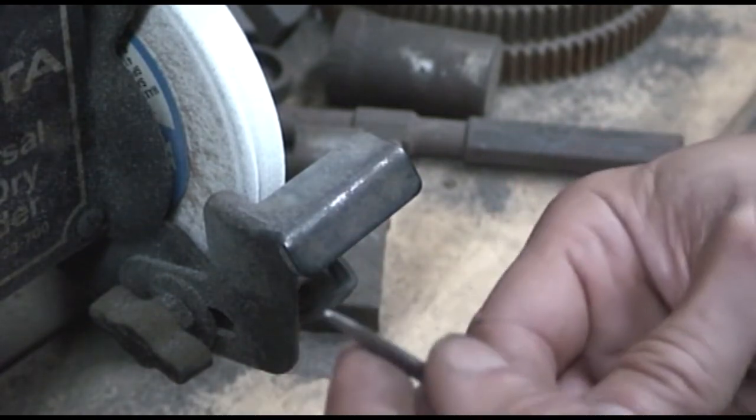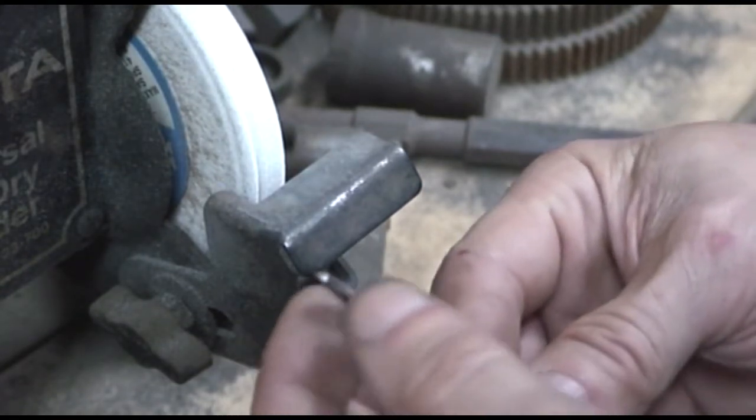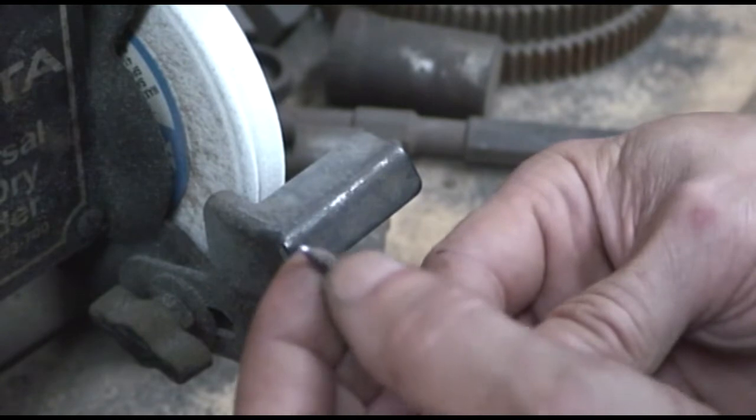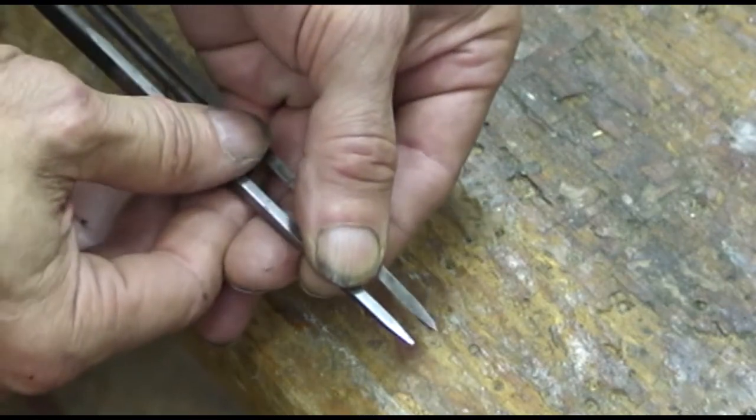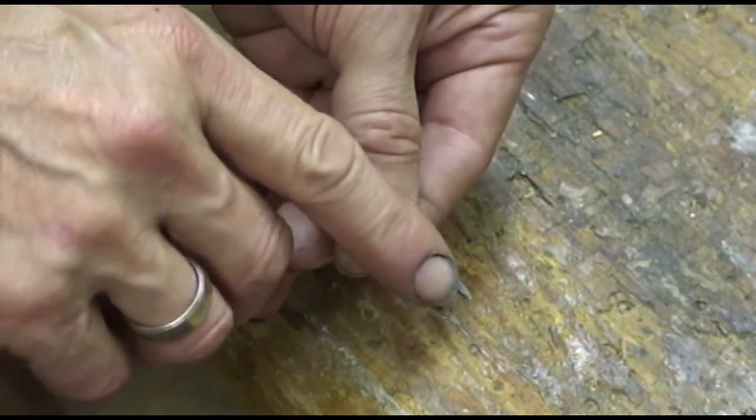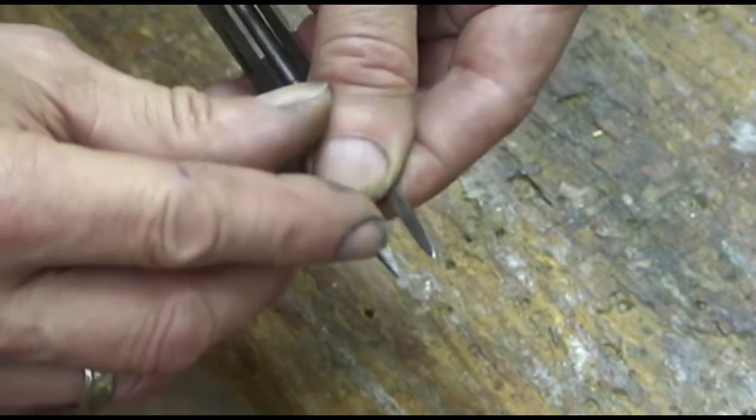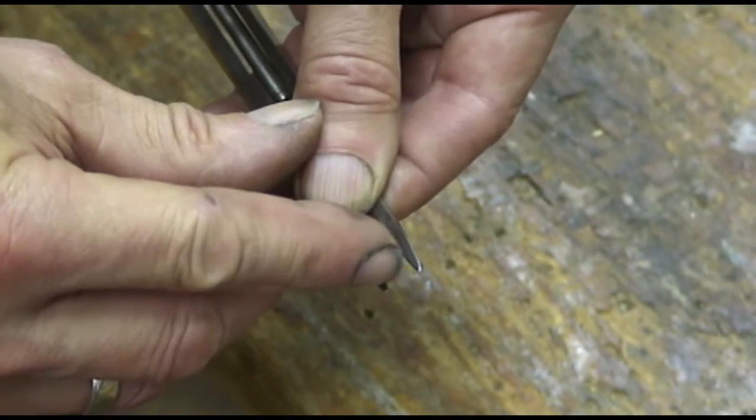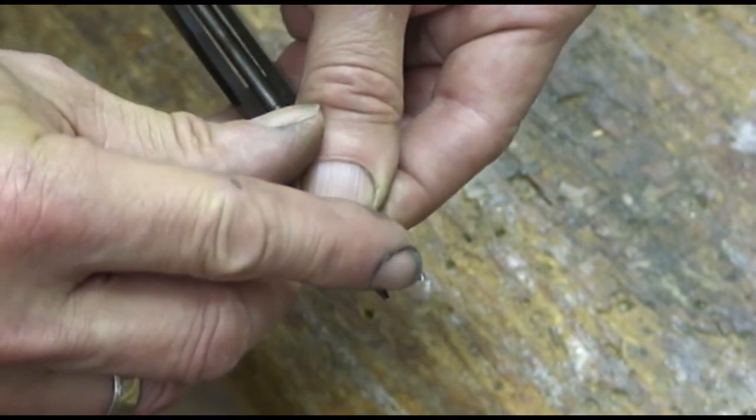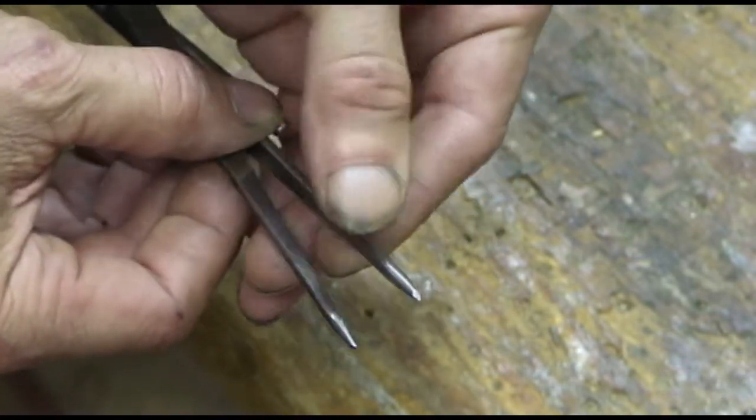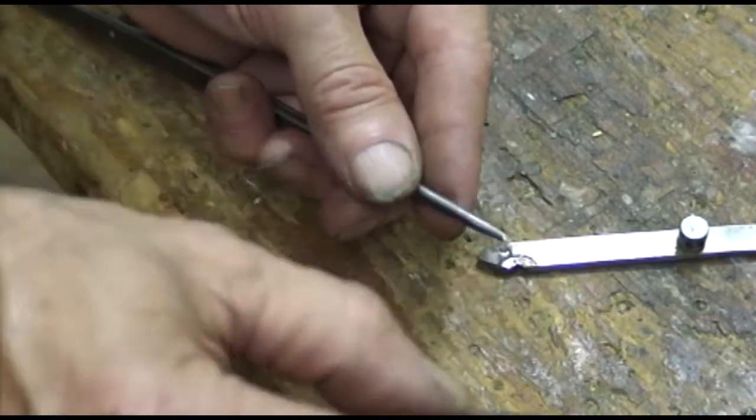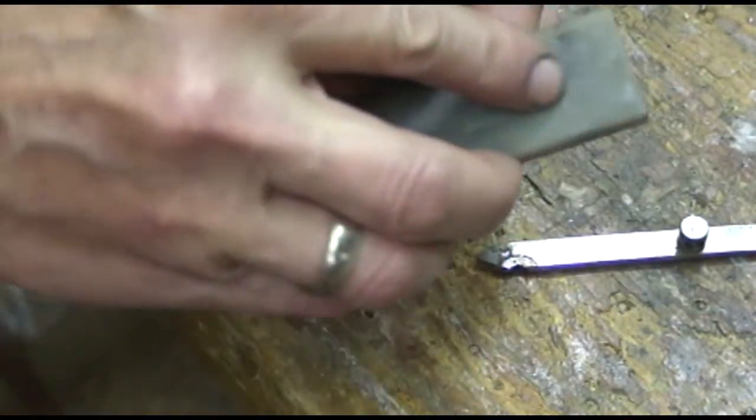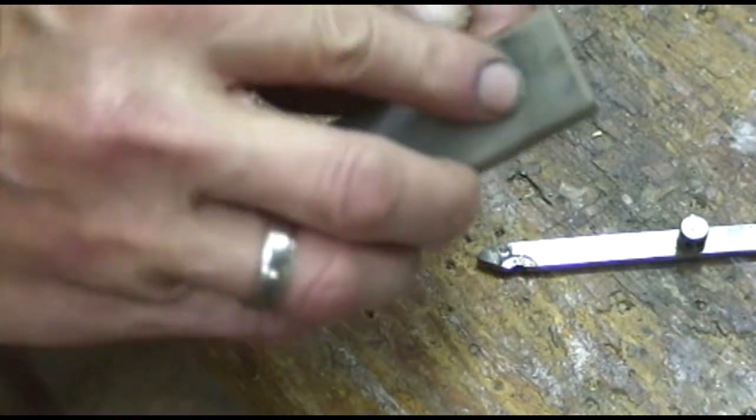It looks pretty centered. I'm going to go back now and just dress that up with an Arkansas hard stone. And let me show you the difference between the two now. This one is about a sixteenth of an inch wide, and this one comes to a point but still has the same bevel on the back. And now I'm going to take a hard stone and dress it up, get the burrs off from the grinding.